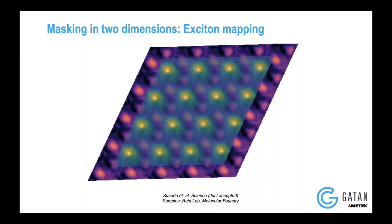What we actually measured is the exciton density of states in a two-dimensional space. What we notice is that the exciton density of states are actually confined to the AA points, which have the minimum area. The reason why it's confined to the AA points is because that's where the flat bands are, and that's how the transition happens very specifically at the AA points. Theoretically it is also known that the electrons and holes — excitons are composed of electrons and holes — at the AA spot, the electrons and holes are located at the same point, and that's why you see these excitons at the AA points.